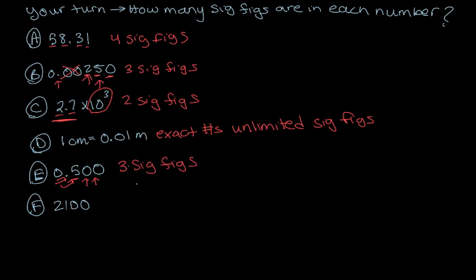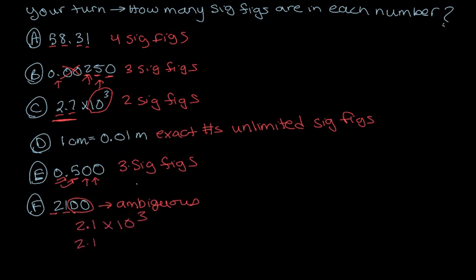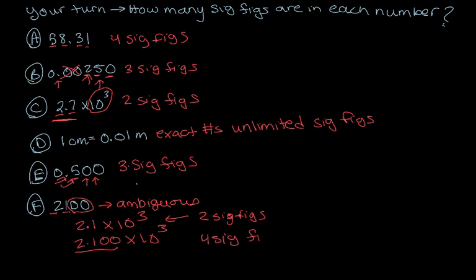For F, we have two non-zero numbers but no decimal point, so we don't know whether those trailing zeros are significant or not — it is ambiguous. We could write it as 2.1 times 10 to the third, or as 2.100 times 10 to the third. So it could either have two sig figs or four sig figs, which is why we write ambiguous.